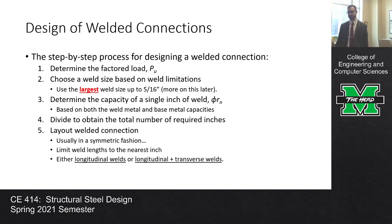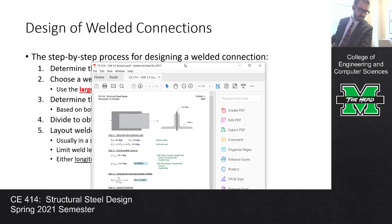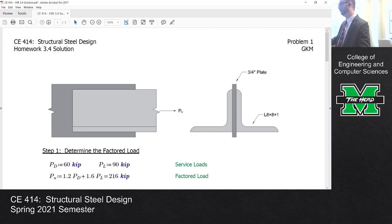On homework 3.4, we had to design a slip critical connection. And in the process of that design, we had to evaluate the bolt bearing, which we were only evaluating one case of bolt bearing. And in doing so, we have to get the thickness of the connection that we're going to use to evaluate that. And I'm pretty sure I got the thickness wrong. I included the thickness of both L members and the three-quarter inch plate in between them. And I guess I'm just asking, what is the correct thickness there?